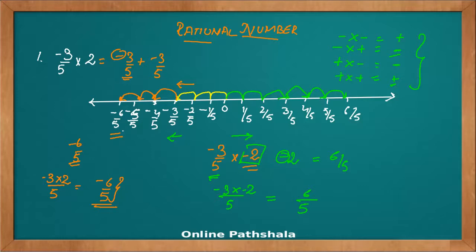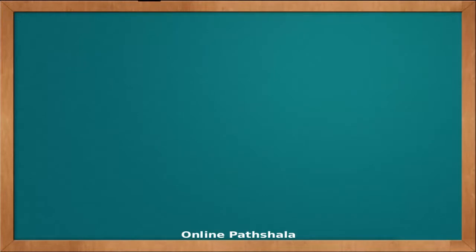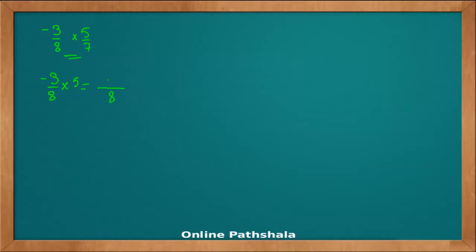Now, here we just talked about a rational number being multiplied with an integer, not with a rational number. How do we multiply a rational number with a rational number? Let's take one example: I have here minus 3 by 8 and I have to multiply it with 5 by 7. Let's first try minus 3 by 8 multiplied by 5 — applying the previous rule, the 8 remains and I multiply the numerator: minus 3 into 5 gives me minus 15 by 8.